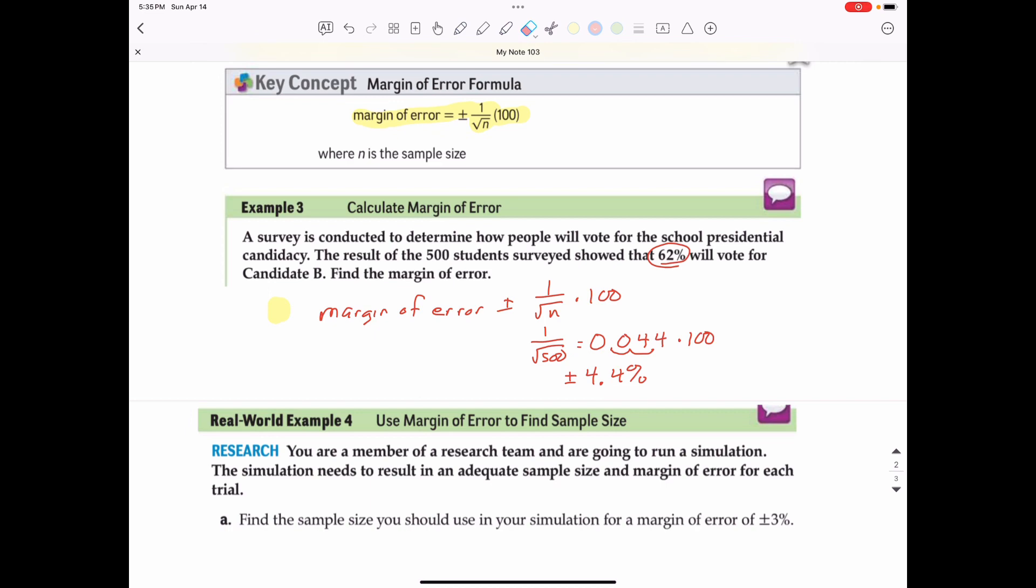So what that means is if we add to this 62% that is circled up there that margin of error, 62 plus 4.4 percent gives us 66.4 percent. And if we subtract 4.4 from 62 percent, we get 57.6 percent. So what that means is that in the actual election, it is likely that candidate B will get anywhere between 57.6 percent to 66.4 percent. Since we know the candidate is going to get at least 57.6 percent of the vote, he or she is most definitely going to win this election.